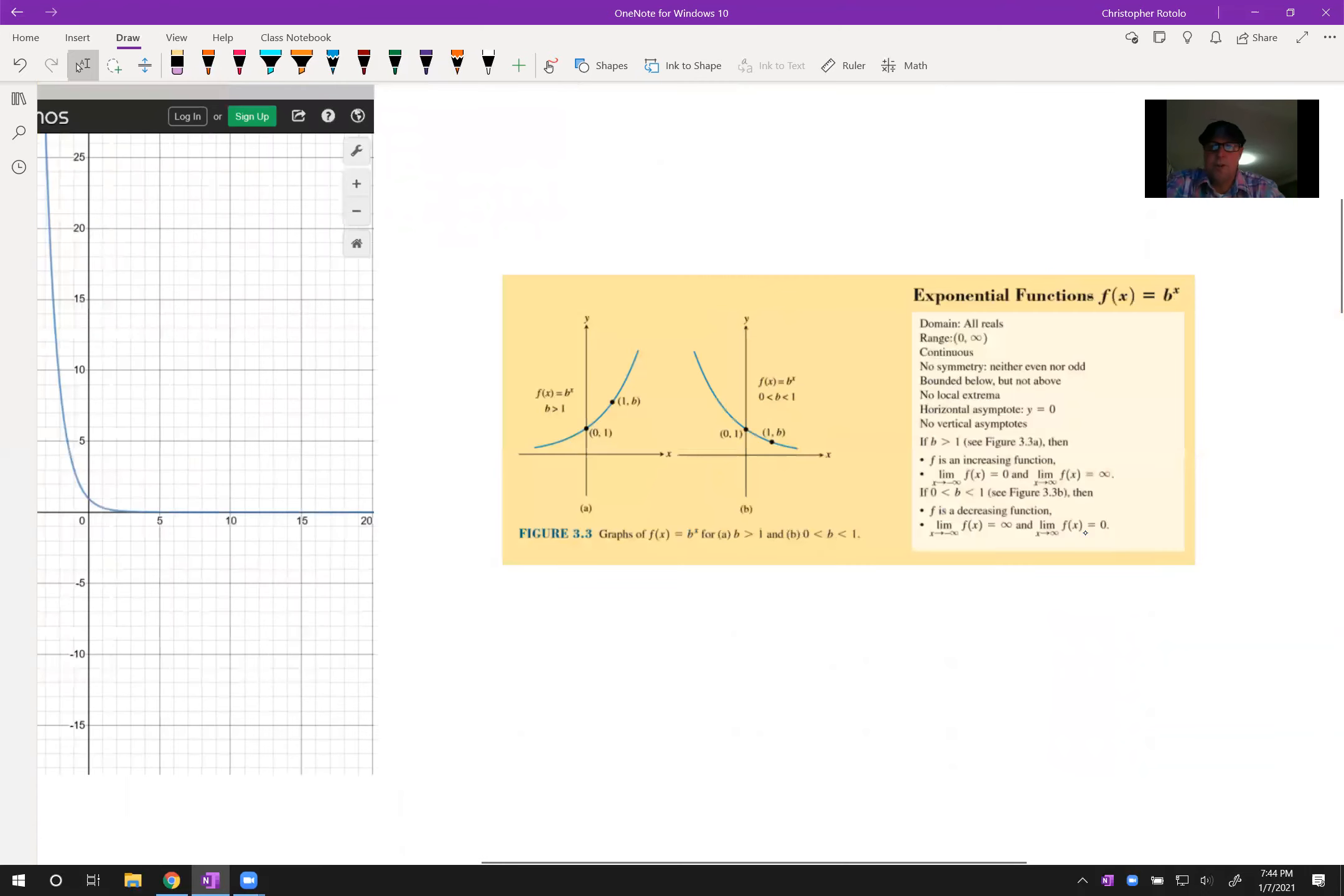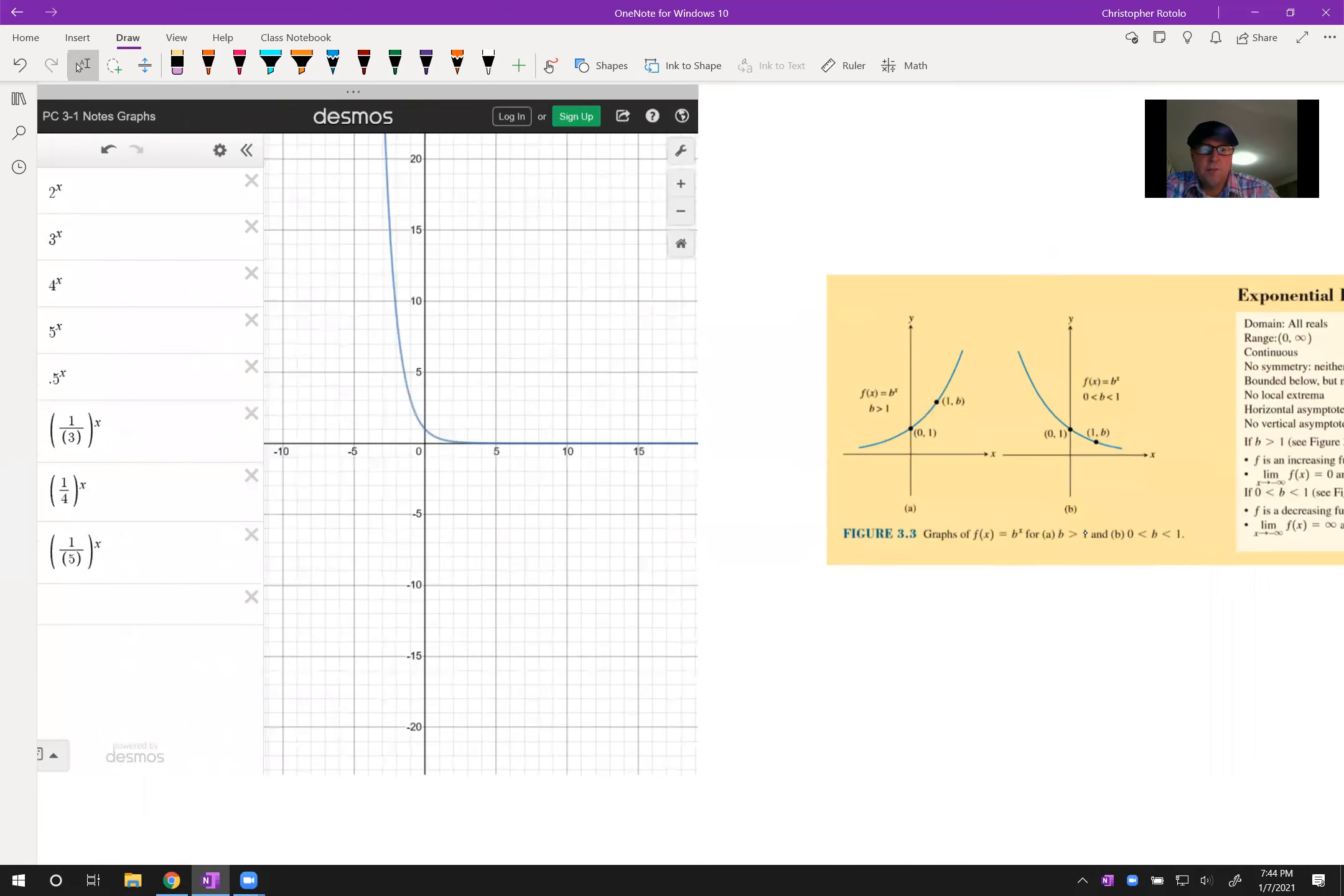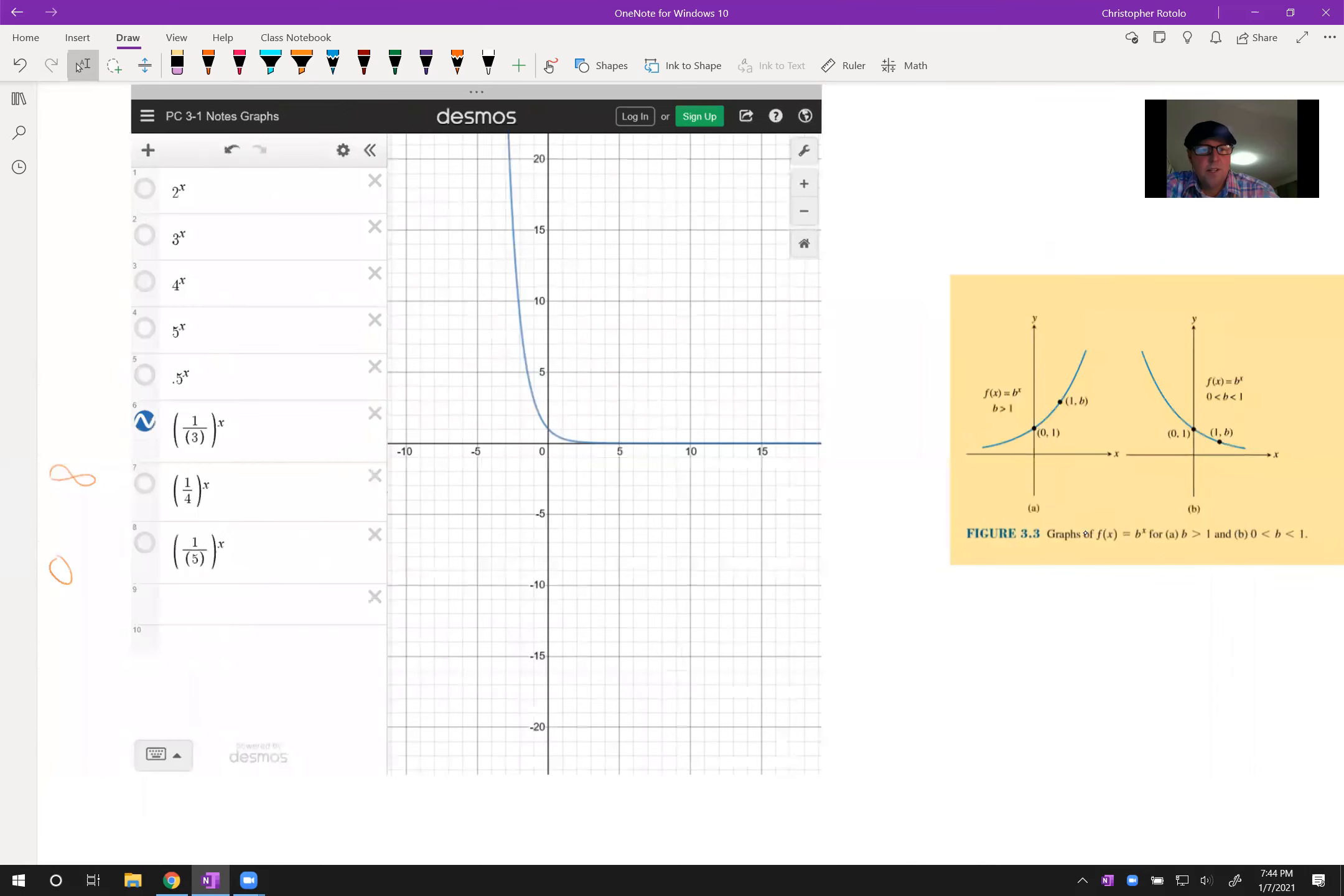So over here, if you scroll over far enough, we do have some similarities here. Domain, all reals. Range, 0 to infinity. Doesn't matter if it's growth or decay. They are continuous. They're not symmetric. Even or odd. They are bounded below but not above. We had a lot of these things we talked about previously. We can start to ask these questions and answer them again. And so as x approaches, we talk about left to right and what's going to happen with our functions. We approach infinity when it's going up and 0 because we won't cross over that value.